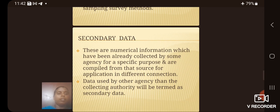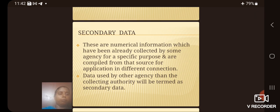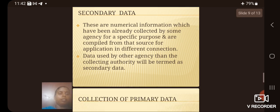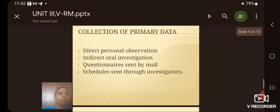Secondary data are numerical information which have been already collected by some agency for a specific purpose and are compiled from that source for application in different connection. Collection of primary data can be: direct personal observation, indirect oral investigation, questionnaires sent by mail and schedules sent through investigators.